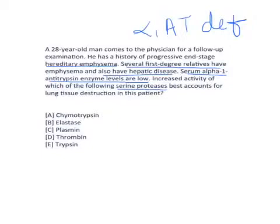In this case we are seeing emphysema and cirrhosis of the liver. The hereditary emphysema here follows an autosomal recessive inheritance pattern in alpha-1 antitrypsin deficiency — that's why several first-degree relatives are affected. The case is also made easier by the laboratory finding that serum alpha-1 antitrypsin enzyme levels are low.